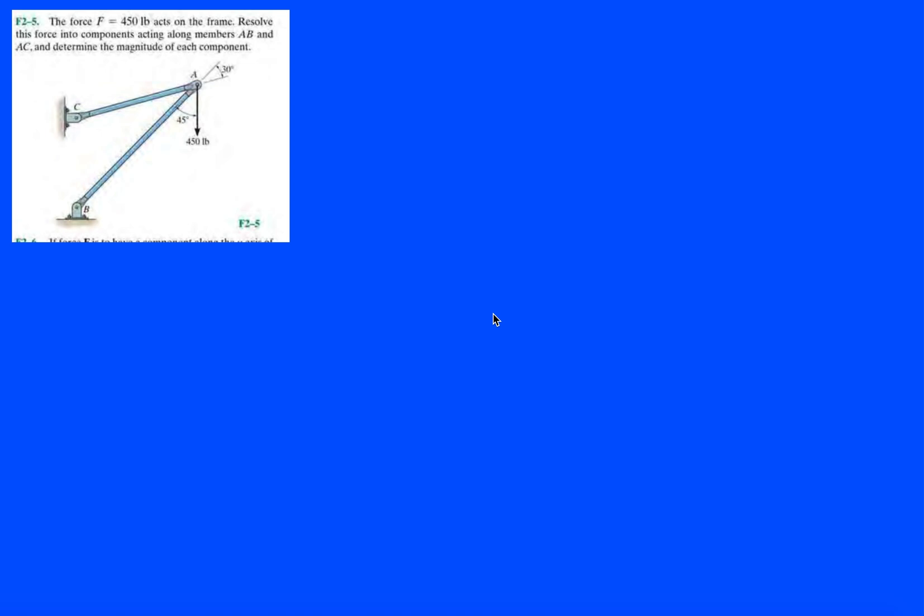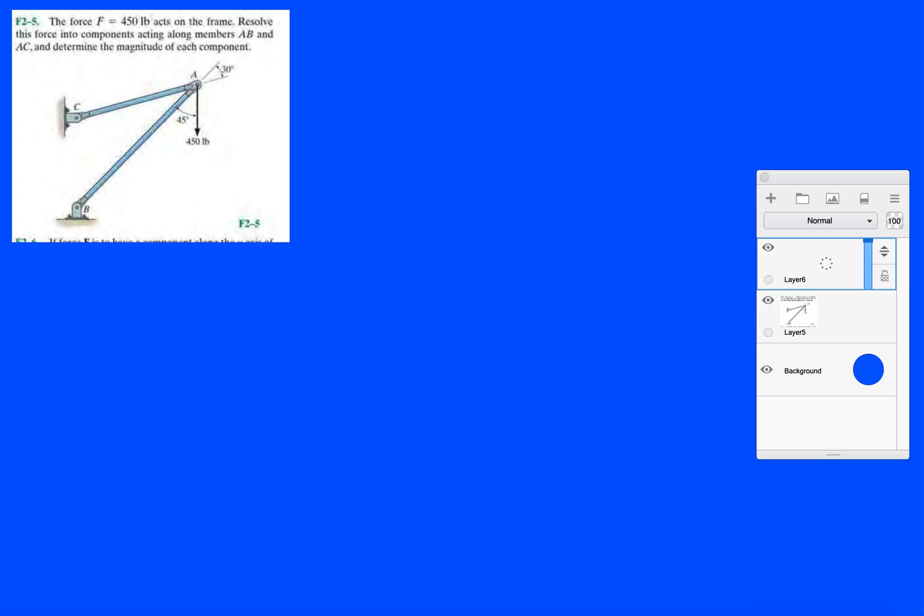We're going to continue with problem 5 from the chapter 2 fundamental problems, and it's going to be a little bit different. Now we get to more challenging stuff. In this problem we're given a force of 450 pounds acting vertically downwards in the negative J direction, and it's acting on this frame.